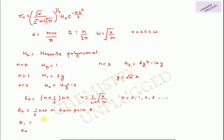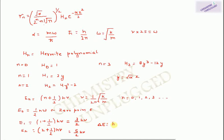We can calculate the energy difference between two successive levels. For the first excited state: E₁ = (1 + ½)hν = (3/2)hν. For the second excited state: E₂ = (2 + ½)hν = (5/2)hν. The difference E₂ − E₁ = hν. The energy difference between two successive vibrational energy levels is always constant, equal to hν.